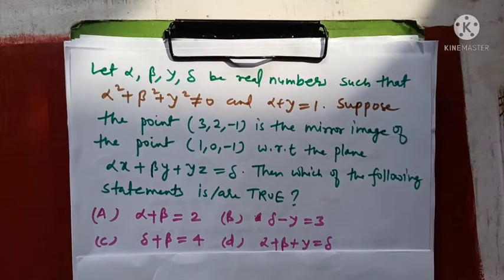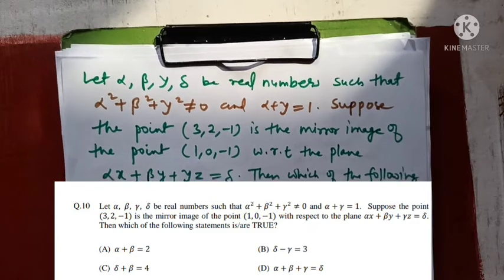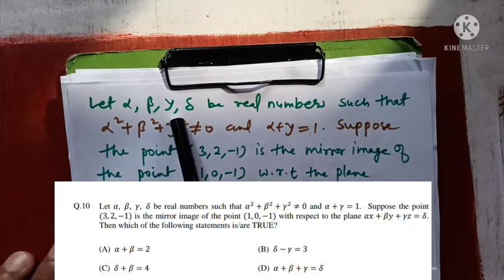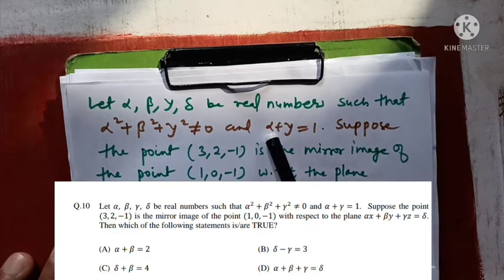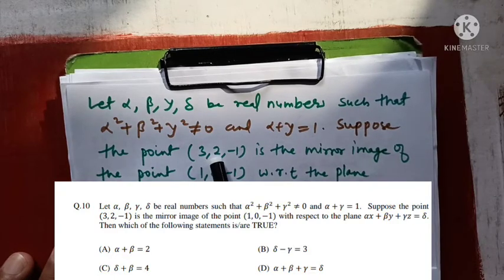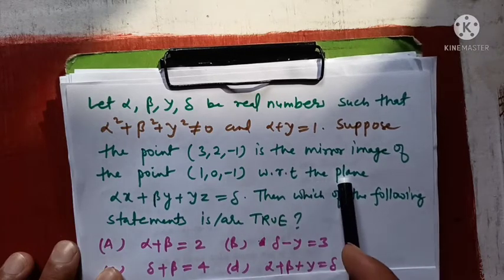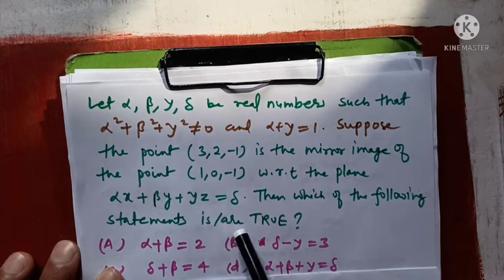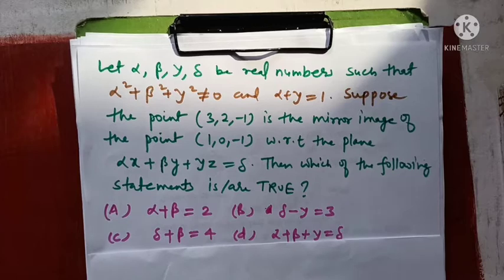Hello students, I will take a question which has come in IIT JEE Advanced 2020. The question is: let alpha, beta, gamma and delta be real numbers such that alpha squared plus beta squared plus gamma squared is not equal to 0, and alpha plus gamma equals 1. Suppose the point (3, 2, -1) is the mirror image of the point (1, 0, -1) with respect to the plane. A plane is given and four conditions are given — which of these conditions will be true.